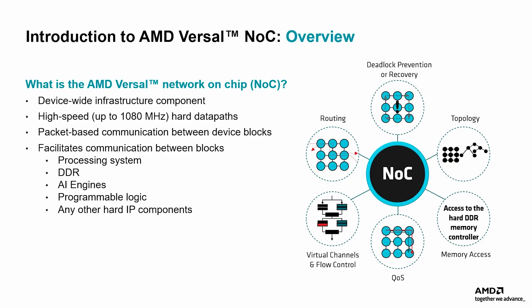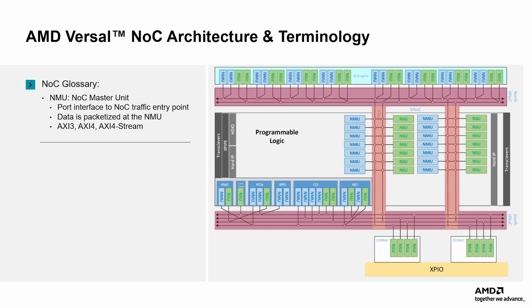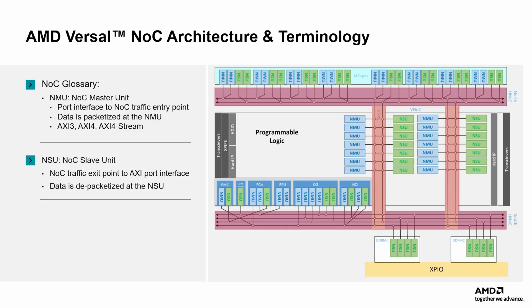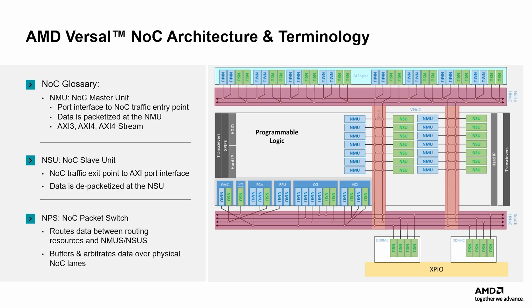This architectural decision improves scalability, data integrity, and performance predictability across the device. The NOC master unit is the ingress port interface to the NOC. The NMU supports packet-based and AXI-based communication protocols as it packetizes AXI data before placing it on the NOC. The NOC slave unit, NSU, is the egress port interface to the NOC. At the NSU, data is de-packetized to AXI for communication outside of the NOC. The NOC packet-switch routes data between the NMUs and NSUs, buffering and arbitrating data over physical NOC lanes. Communication is fully AXI compliant — AXI3, AXI4, and AXI4 stream are supported.